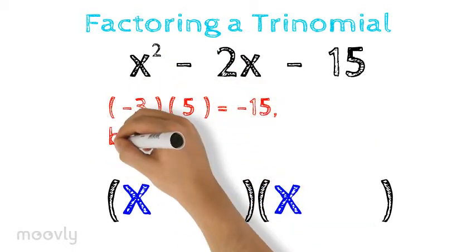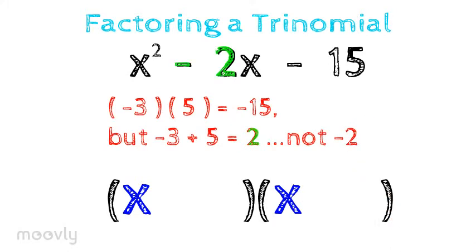Negative 3 and 5 are closer, but their sum is positive 2, and we're looking for a negative 2.